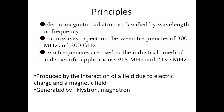Microwaves are produced by the interaction of electric and magnetic fields. Both fields are required to oscillate at the same frequency and perpendicular to each other — at 90 degrees — to generate electromagnetic radiation.